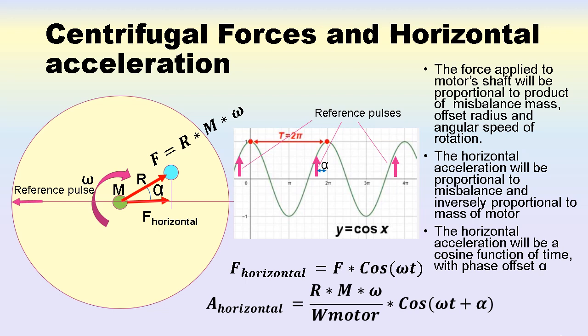This force vector is applied to the axis of rotation and directed along the radius. If we place the mass with equivalent rotation momentum at location opposite to imbalance, the force will be compensated. The projection of the vector on horizontal and vertical directions will be F times sine(ωt), and F times cosine(ωt) respectively.